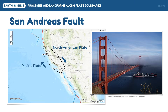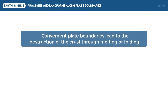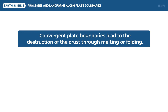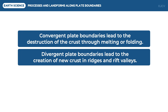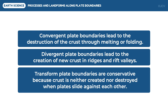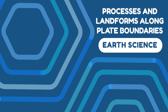To summarize this video lesson, let us review the following key points. Convergent plate boundaries lead to the destruction of the crust through melting or folding. Divergent plate boundaries lead to the creation of new crust in ridges and rift valleys. And lastly, transform plate boundaries are conservative because crust is neither created nor destroyed when plates slide against each other. And that ends our discussion on the processes and landforms along plate boundaries.